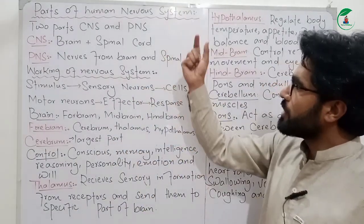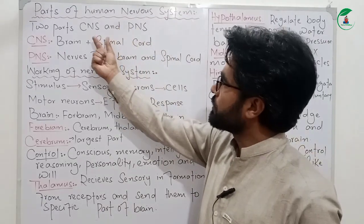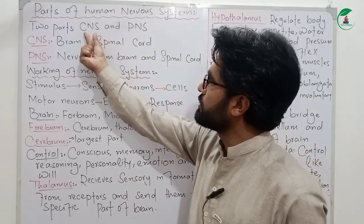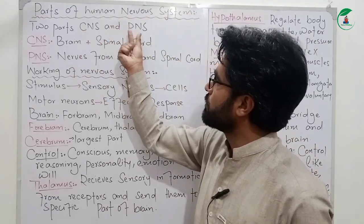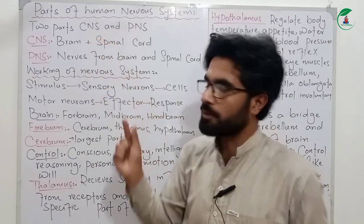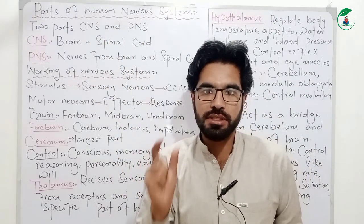What is the human nervous system? It consists of CNS and PNS. CNS is the Central Nervous System.